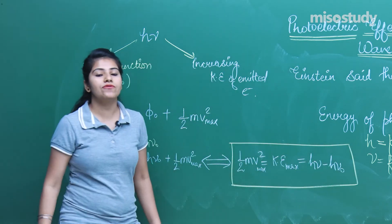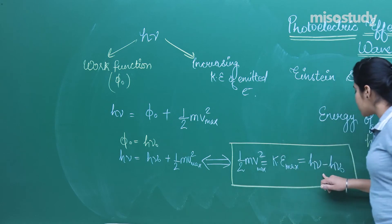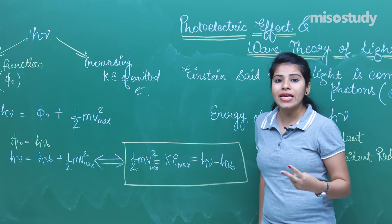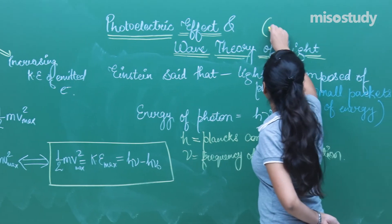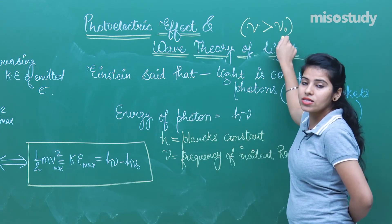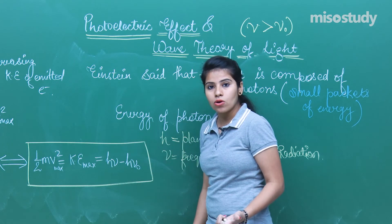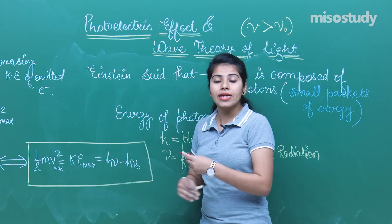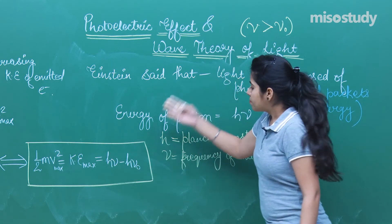From this equation we can draw conclusions. The condition for the second law of photoelectric emission is verified: if nu is less than nu naught, the kinetic energy would come out negative, which is impossible. So to get electrons to emit, nu must be greater than nu naught. This verifies the second law from the equation itself.